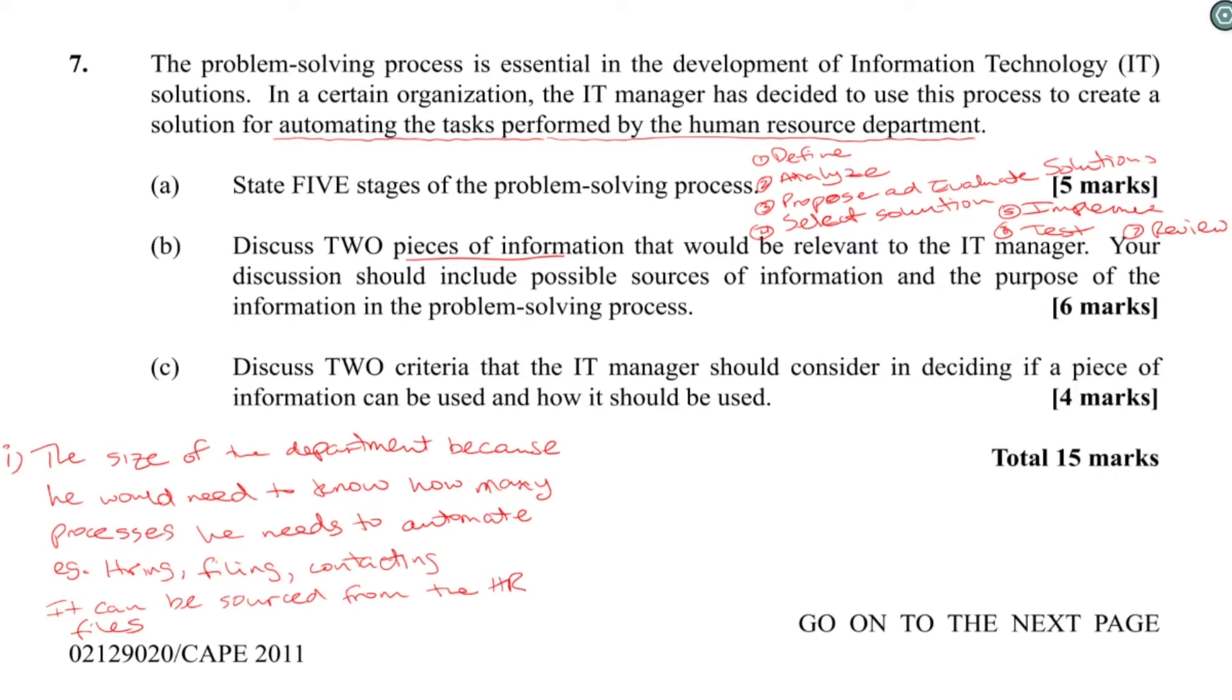So the current level of software they use and the level of automation that is already present. This would help him to know how much new software you need to get. Example: if they're currently using Excel or Access to see if they need to source things from the IT department.